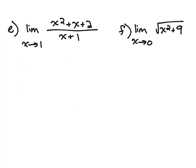Let's try another problem. Here we're going to substitute a 1 in for our x's, so I get 1 squared plus 1 plus 2 over 1 plus 1. Well that is 1 plus 1 plus 2 is 4 over 2 results in a limit of 2.